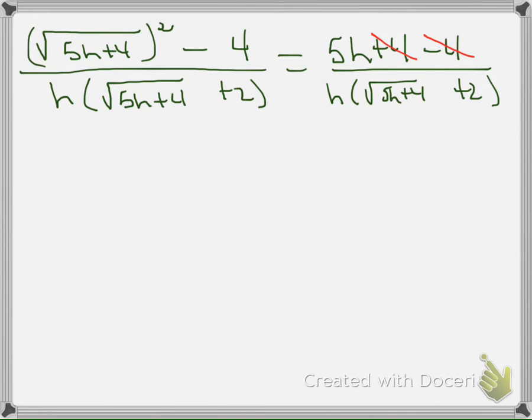So this is looking pretty good because what you see now is that after I simplify this, the algebra gives me 5h divided by h times the square root of 5h plus 4 plus 2.